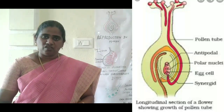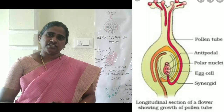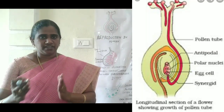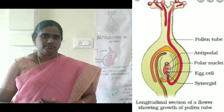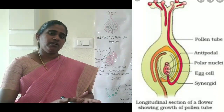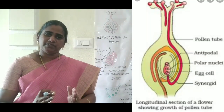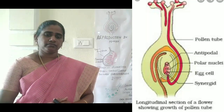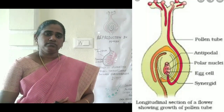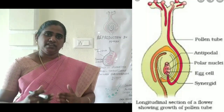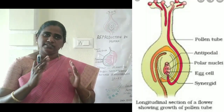Since two fertilizations take place inside the ovary, this process is called double fertilization. After the fertilization process is complete, the ovary develops into the fruit. The ovule develops into the seed. The integument of the ovule develops into the seed coat. The seed coat carries the embryo, which develops into the seedling when it falls on a suitable substratum.